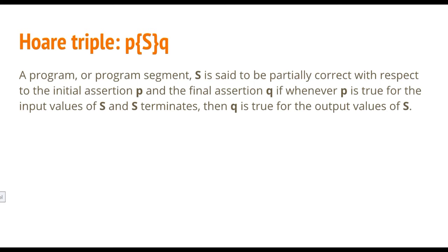Here now comes the Hoare triple. A program or program segment S is said to be partially correct with respect to the initial assertion P and the final assertion Q, if whenever P is true for the input values of S and S terminates, then Q is also true for the output values of S.